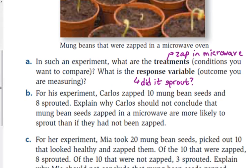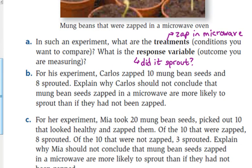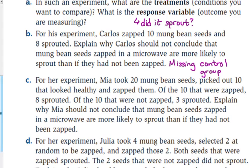Here's one scenario. Carlos planted 10 mung bean seeds and 8 of those sprouted. Why should Carlos not conclude that the ones zapped in the microwave are more likely to sprout? You don't know what happens if they're not zapped — he zapped all of them. He doesn't have a control group. So that's our reason: missing the control group. You have to have something to compare it to. Even though the probability was high here, they may have sprouted regardless.